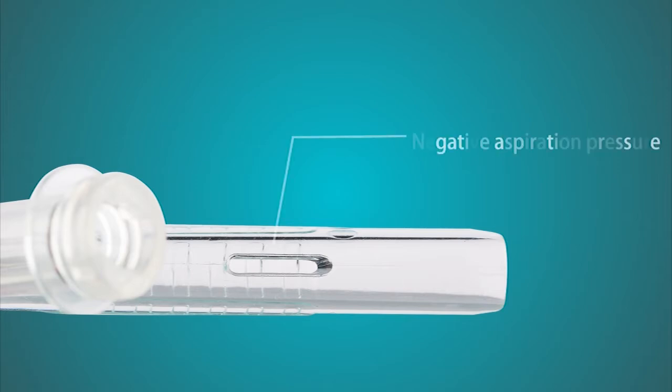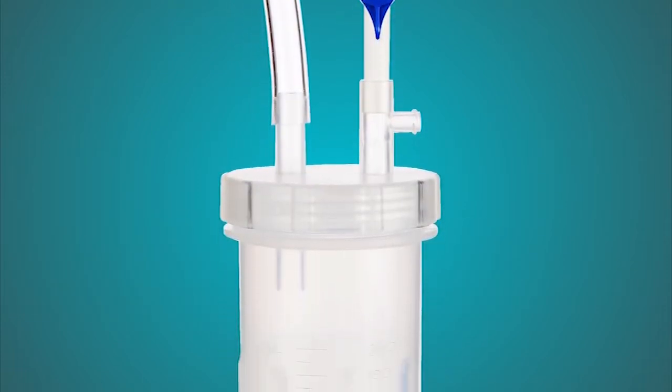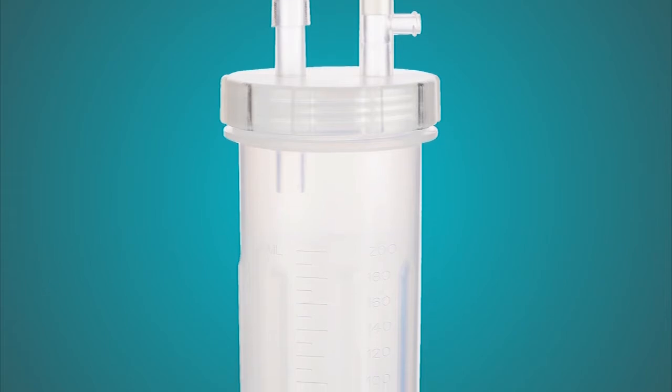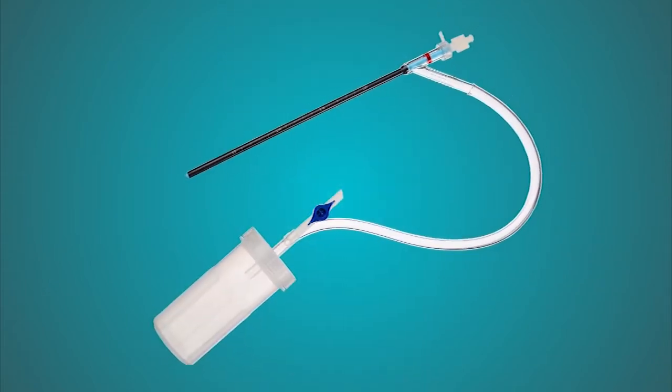The negative aspiration pressure can be adjusted using the pressure vent on the oblique branch. The collection bottle is used for collecting the stone fragments. The bottle can be sent directly to the laboratory.